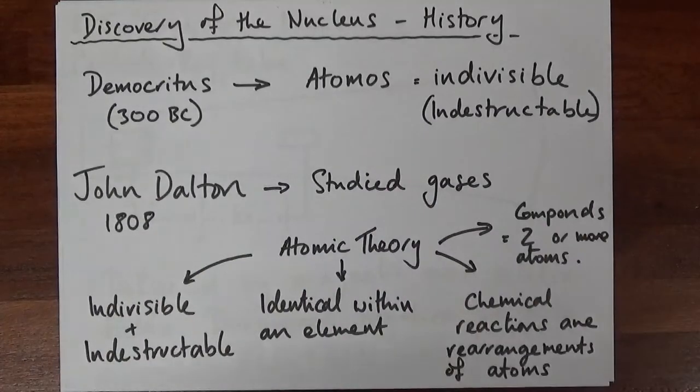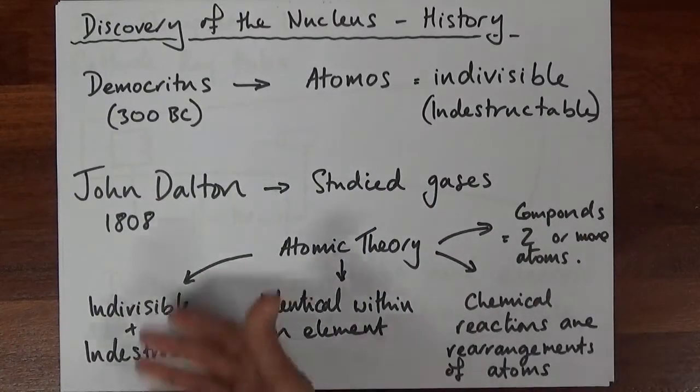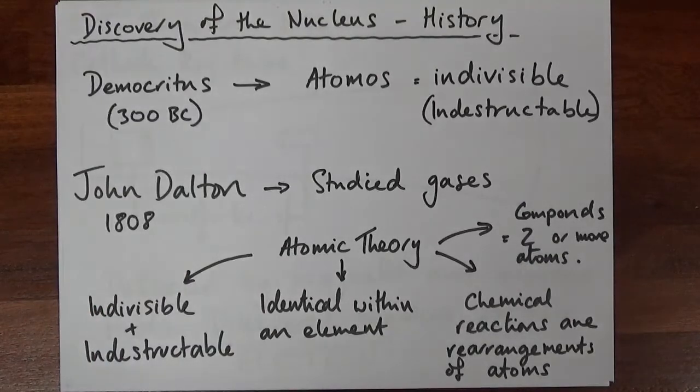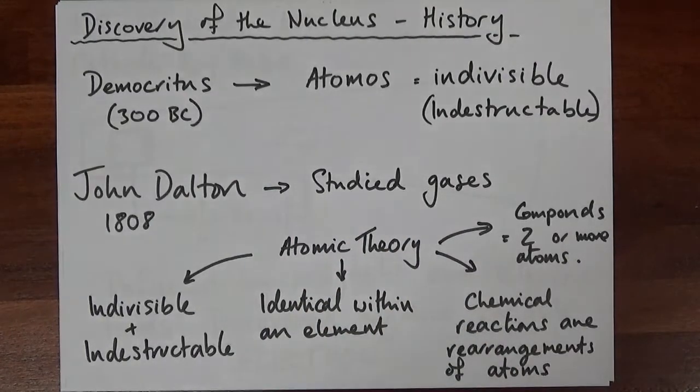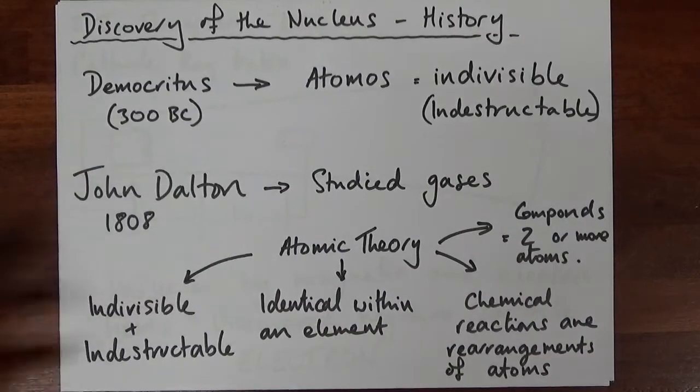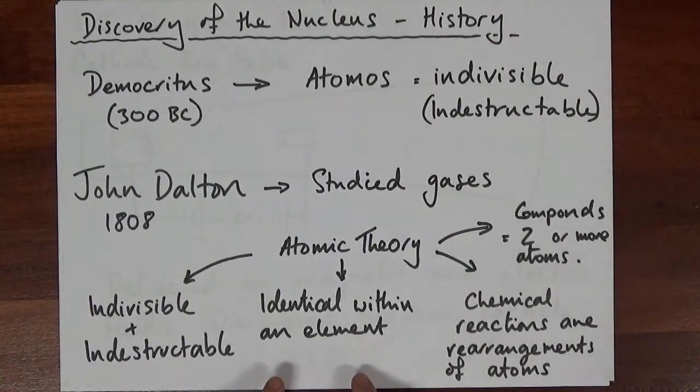Until about 1808, when the English school teacher John Dalton came up with his atomic theory. He studied gases and reactions between gases, how they behave when they're compressed. He developed and expanded Democritus's theory and came up with his own atomic theory which retained the idea that atoms are indivisible and indestructible, but he also added that within a given element, every atom would be identical.